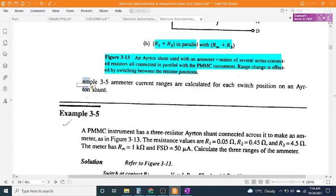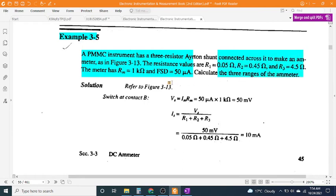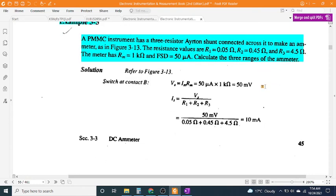Range change is affected by switching between the resistor junctions. Example 3-5: Ammeter current ranges are calculated for each switch position on an Ayrton shunt. A PMMC instrument has R_M = 1 kΩ and FSD = 50 μA. An Ayrton shunt has resistor values R_1 = 0.05Ω, R_2 = 0.45Ω, and R_3 = 4.5Ω. Calculate the three ranges of the ammeter.